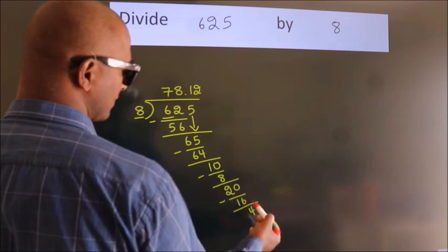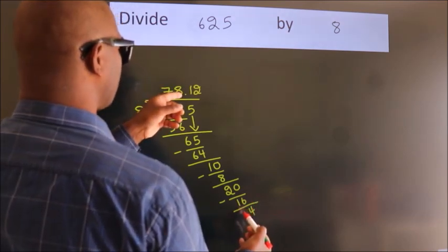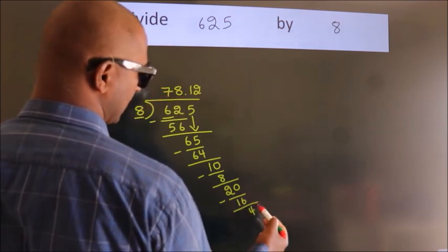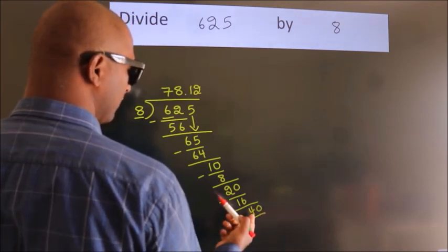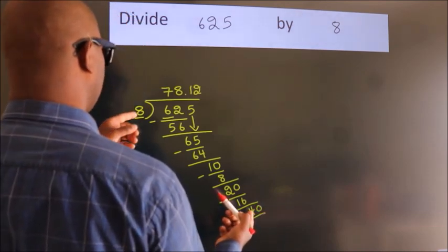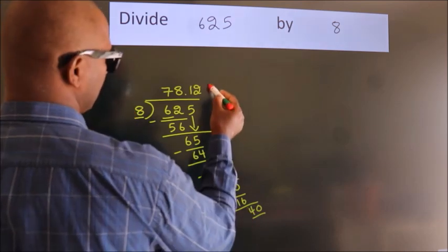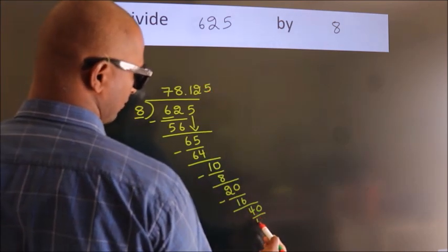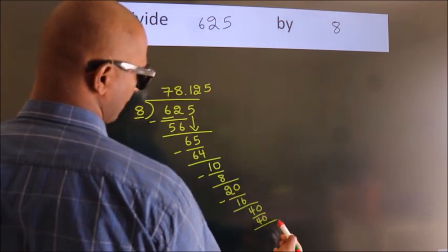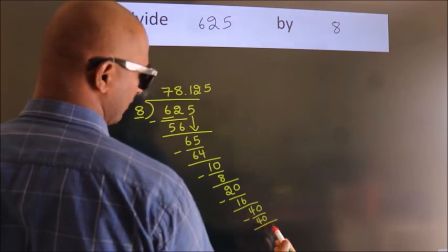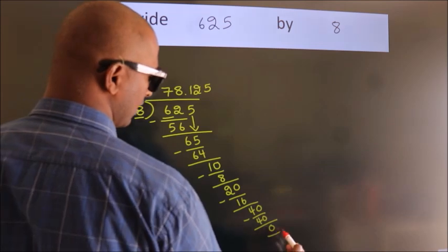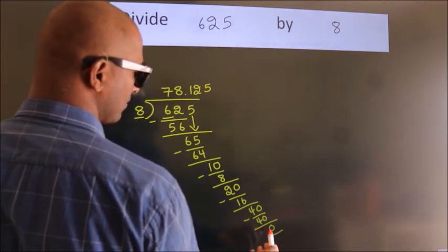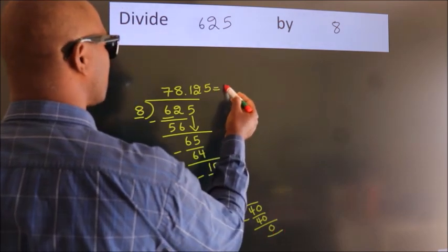After this, we get 40. Now, we subtract. We get 0. Here, we got remainder 0. So, this is our quotient.